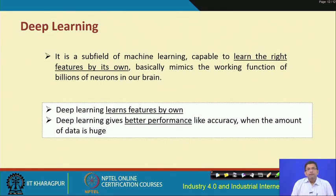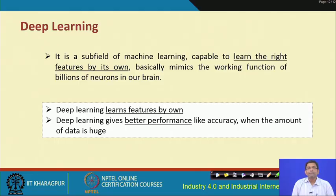Deep learning is a subfield of machine learning which is capable of learning the right features on its own. It mimics the working function of billions of neurons in our brain. Inspired by the complicated neural structure of the brain, deep learning builds upon that — though it is inspired but not exactly brain-based. Deep learning learns the features on its own.